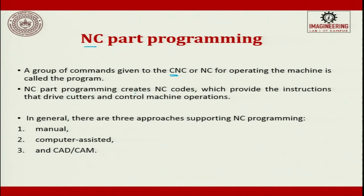NC part program creates NC codes — numerical control codes which provide instructions. These codes are library functions which do a specific task. Each feature can be written as a library function and used for executing the program, which finally generates a part. NC part programming creates NC codes — these library functions provide the instructions that drive cutters and control machine operations.